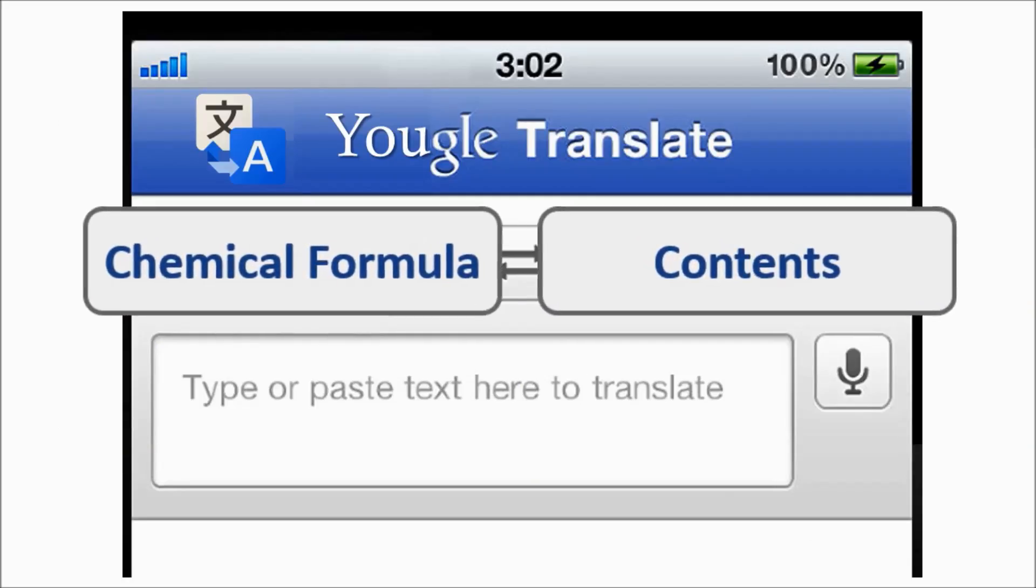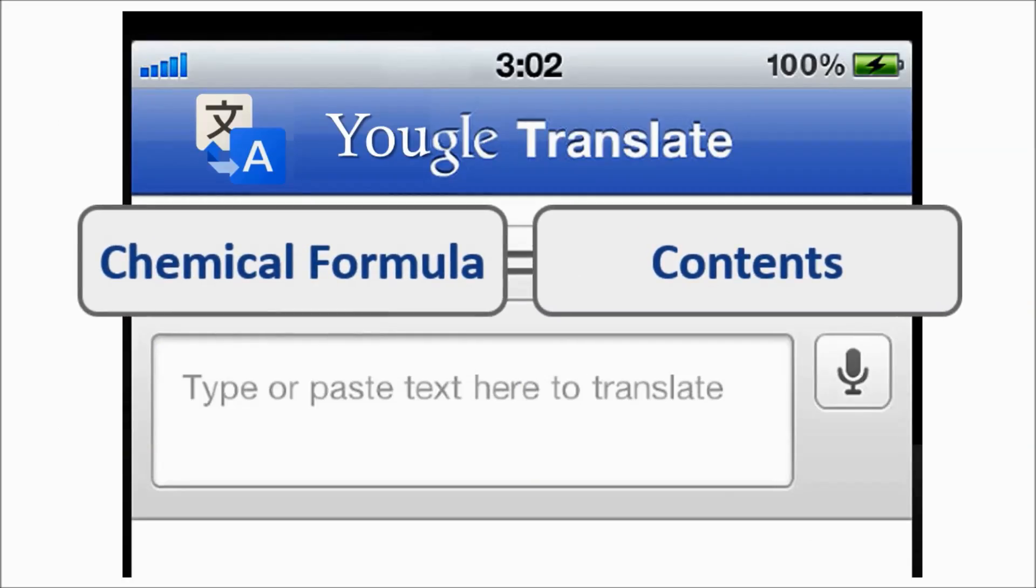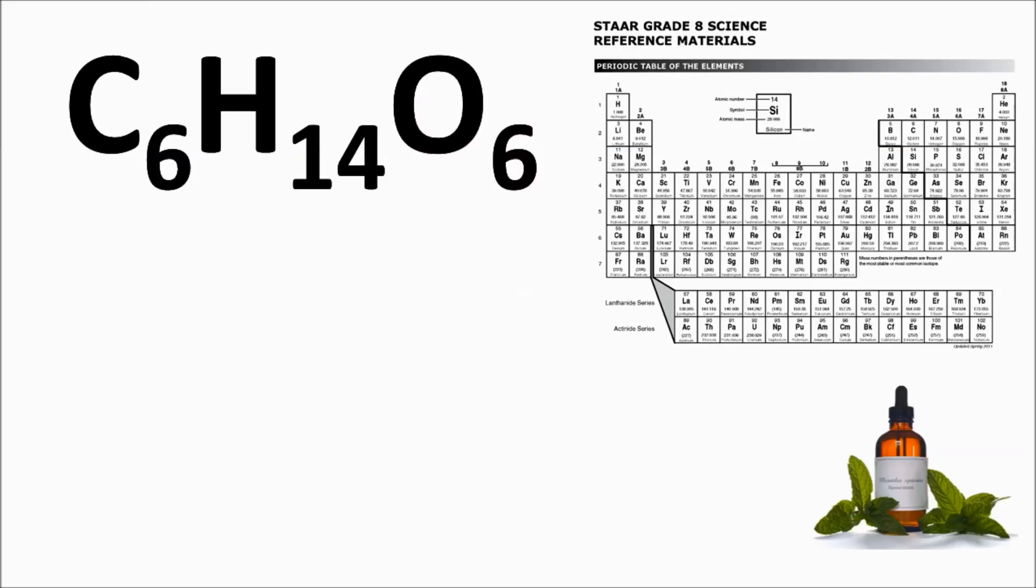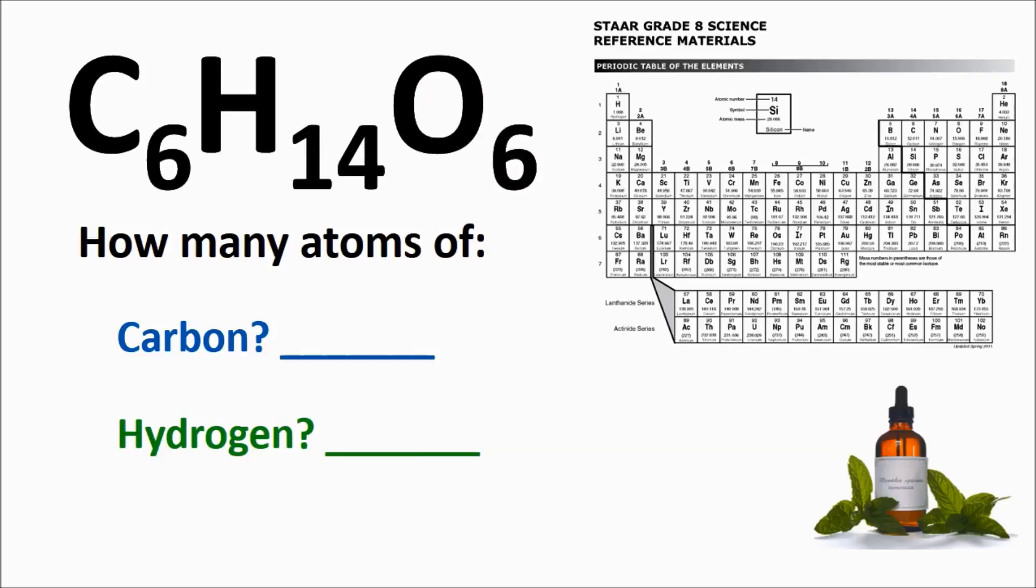All right, now this is more like what you will be seeing in class. When you are given a chemical formula, tell how many atoms of each element are present. Use your periodic table and the chemical symbols to find the elements present in spearmint oil. How many atoms of carbon are in one molecule? How many atoms of hydrogen? How many atoms of oxygen?